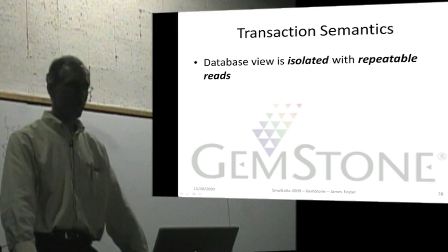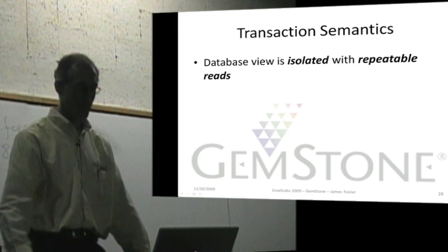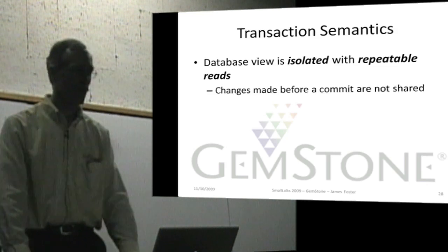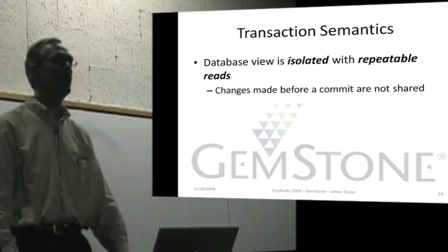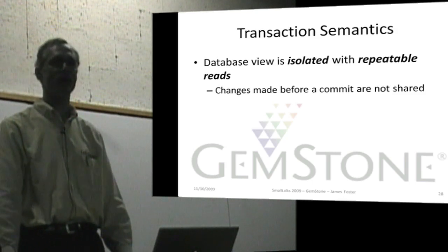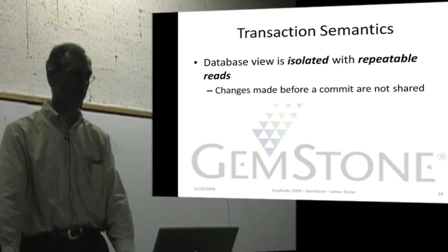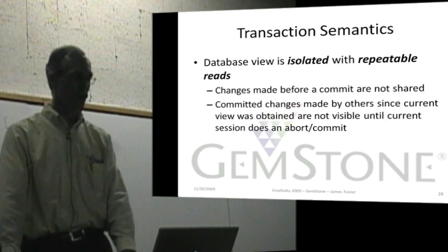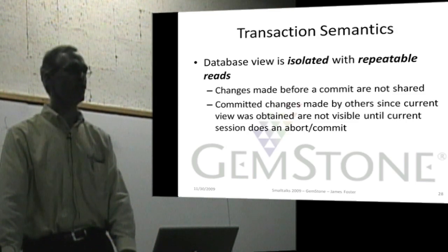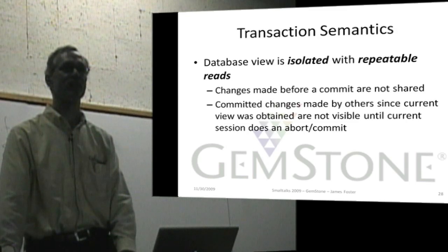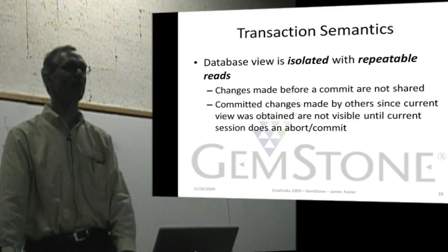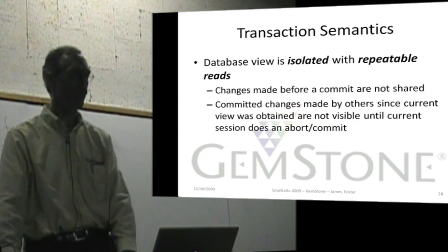In GemStone we have transactional semantics. Your view is isolated with repeatable reads. So changes that you make before you commit are not visible outside your session — they're visible to you but not to others. Changes made in other sessions since you started are not visible to you. So once you have a particular view, your view stays consistent. You have a snapshot of the database at the moment when you last did an abort or commit.